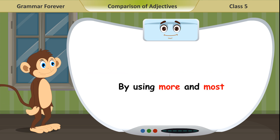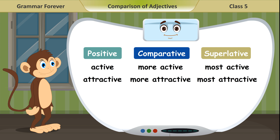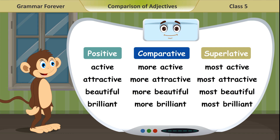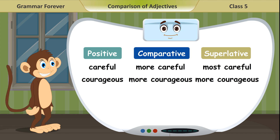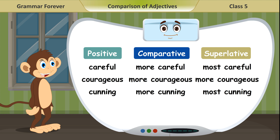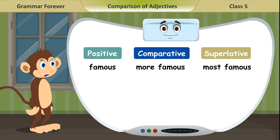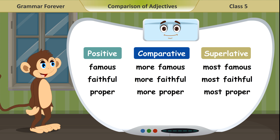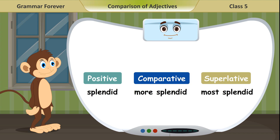By using MORE and MOST: Active, more active, most active. Attractive, more attractive, most attractive. Beautiful, more beautiful, most beautiful. Brilliant, more brilliant, most brilliant. Careful, more careful, most careful. Courageous, more courageous, most courageous. Cunning, more cunning, most cunning. Difficult, more difficult, most difficult. Famous, more famous, most famous. Faithful, more faithful, most faithful. Proper, more proper, most proper. Popular, more popular, most popular. Splendid, more splendid, most splendid.